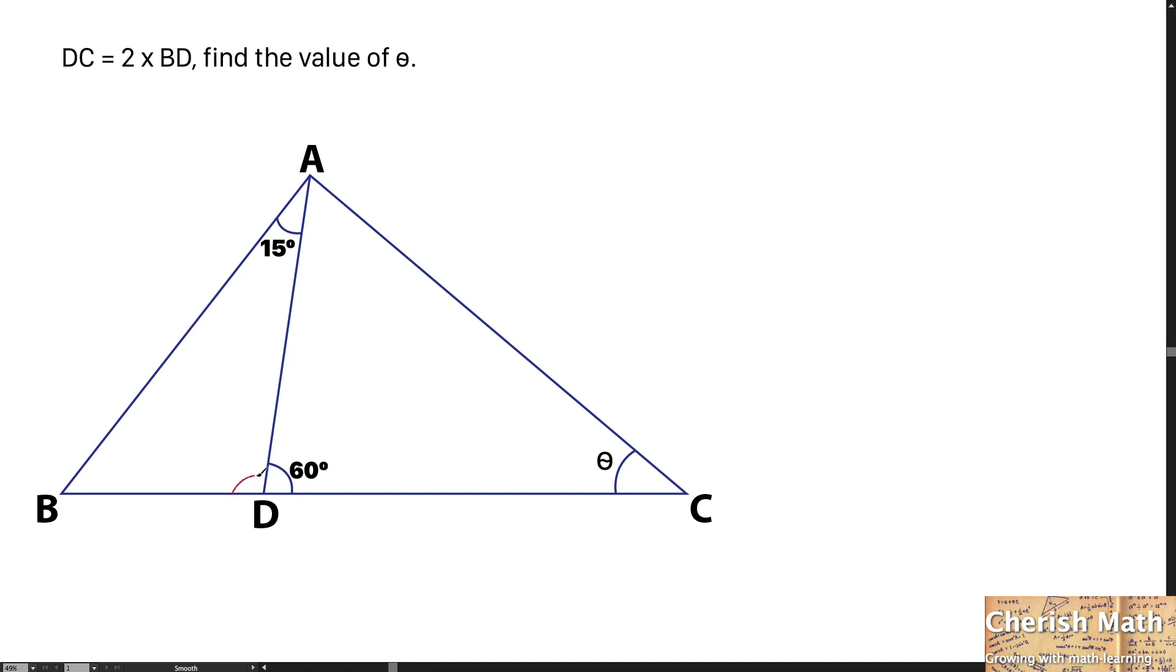The angle for this part is 120 degrees. I use 180 degrees minus 60 degrees to get 120 degrees. And for this part, it's 45 degrees. For triangle ABD, simply by using supplementary angles, we get this value.